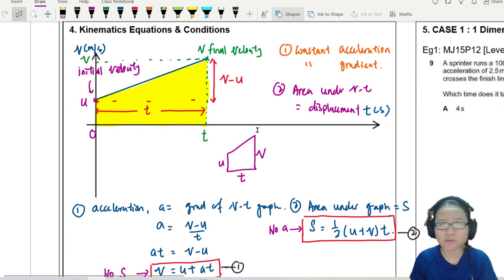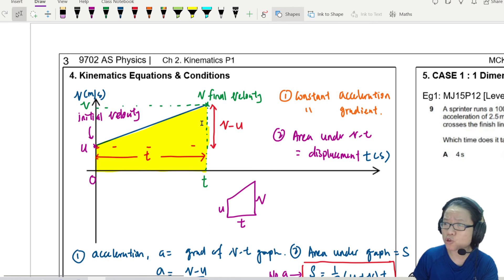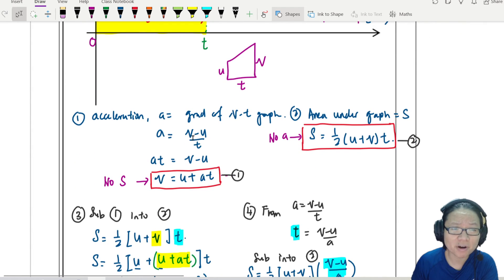Only use all of these four equations if acceleration is constant. Because remember, where does all this equation come from? They come from this beautiful straight line. So if this line is not straight, can I say that the gradient can be found by this expression? Cannot. Have to differentiate, bring in my friend dy dx calculus. Can I say that the area is a trapezium? If this inclined line is a curve? No.